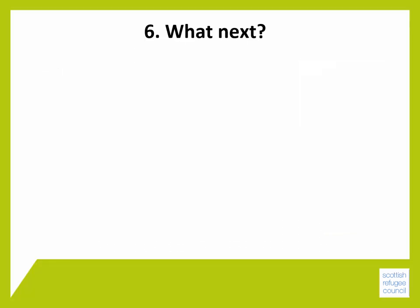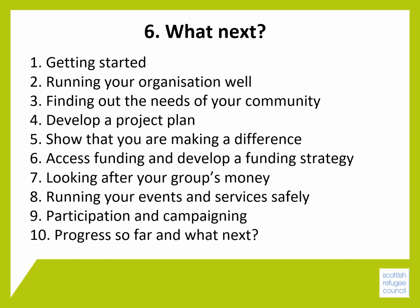Now that you've set up your organisation, the work is just beginning. If you haven't already done so, have a look at Module 1, Getting Started, which will help you identify which modules in this resource would be most useful for your group. There are 10 modules in total, and all of them are useful for new groups. They will all help you to become stronger as an organisation, and they'll help you to access the funding you need to achieve your aims. Good luck!